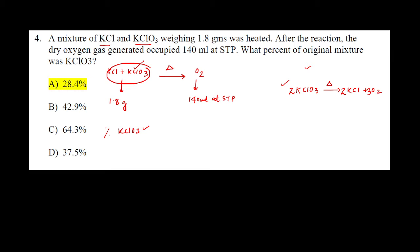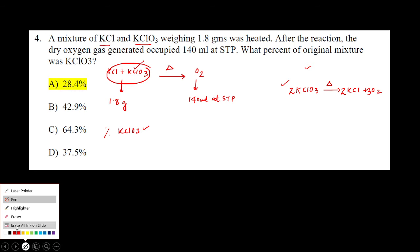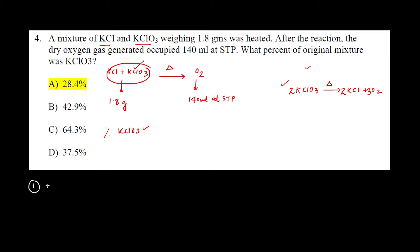We have 140 mL of oxygen gas in the reaction vessel. We can figure out the number of moles of O2 using the volume at STP. Given volume is 140 mL and molar volume at STP is 22400 mL, so 140 divided by 22400 gives 0.00625 moles of O2 gas.